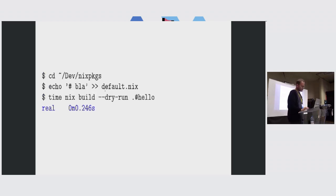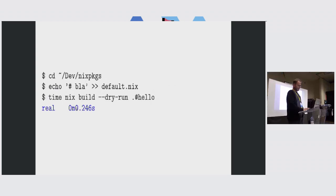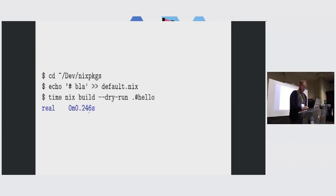This is what it looks like in practice. If I'm hacking on the nixpkgs flake — a git work tree — and I run nix build, it's a lot faster: 0.2 seconds. It's not copying the nixpkgs flake to the Nix store anymore.